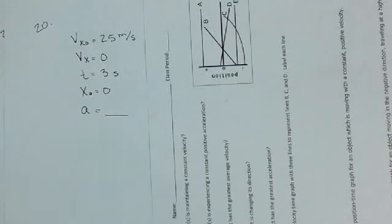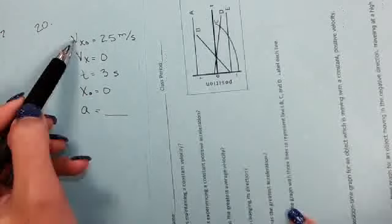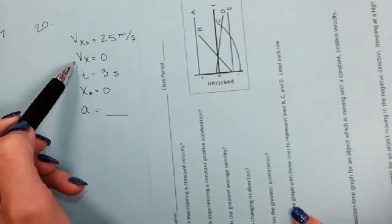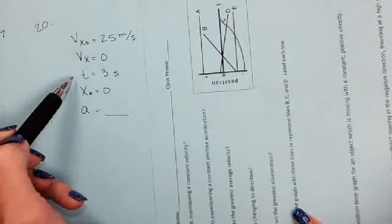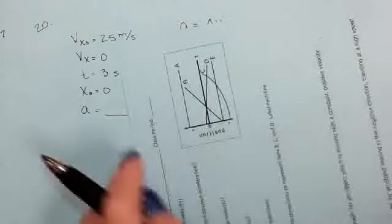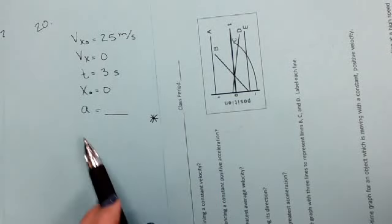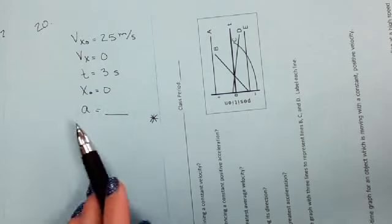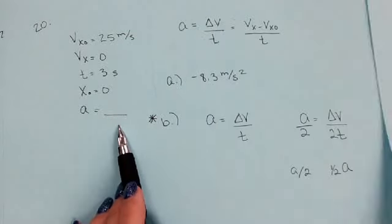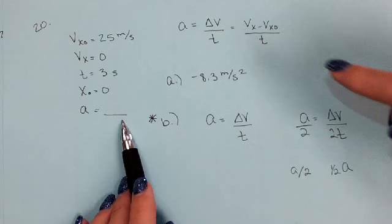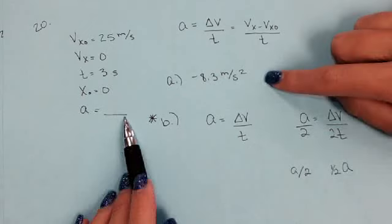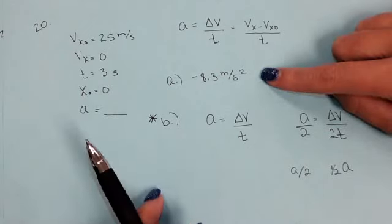Number 20. On number 20, we have a bus that goes from 25 meters per second to zero in 3 seconds. I just go ahead and put the initial position every time, just in case I need it. Looking for acceleration. Still not a whole lot new, but there's a big point to this question. I didn't even work out A, but if this were your test question, you would get points deducted. Make sure you're working it out.